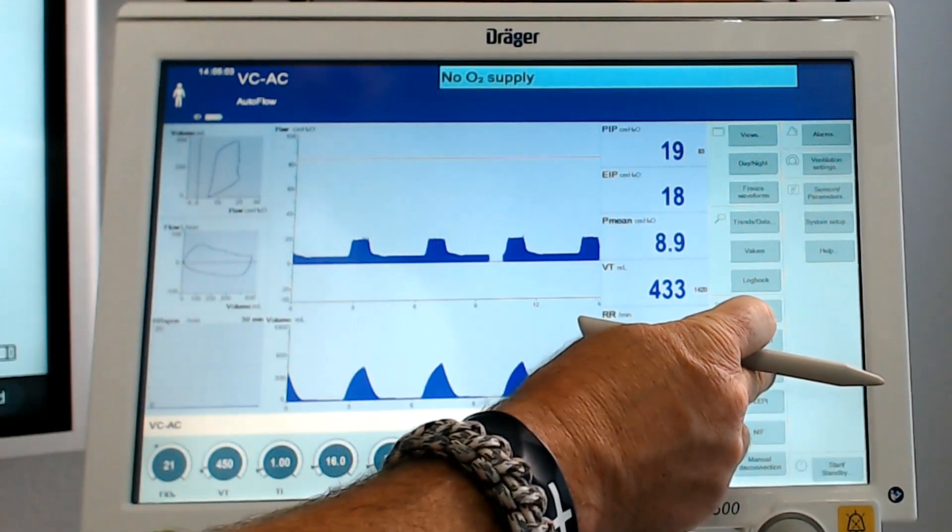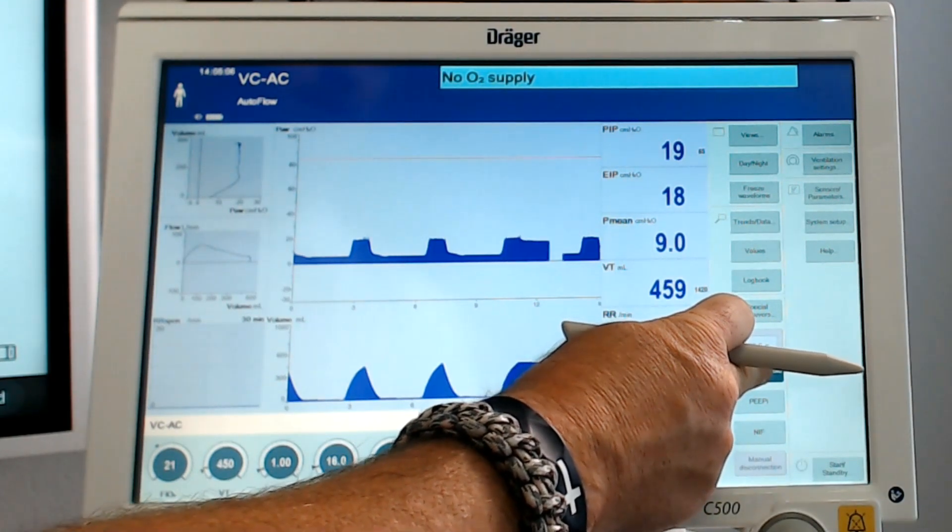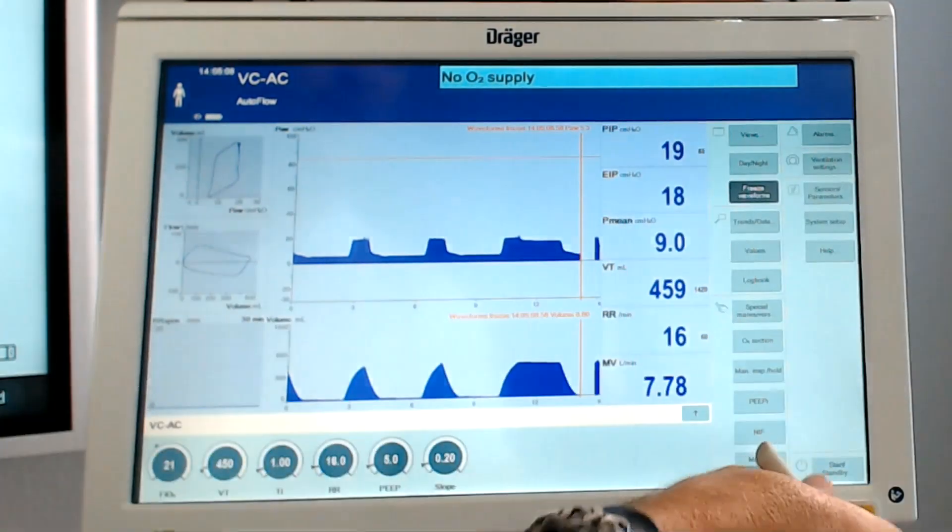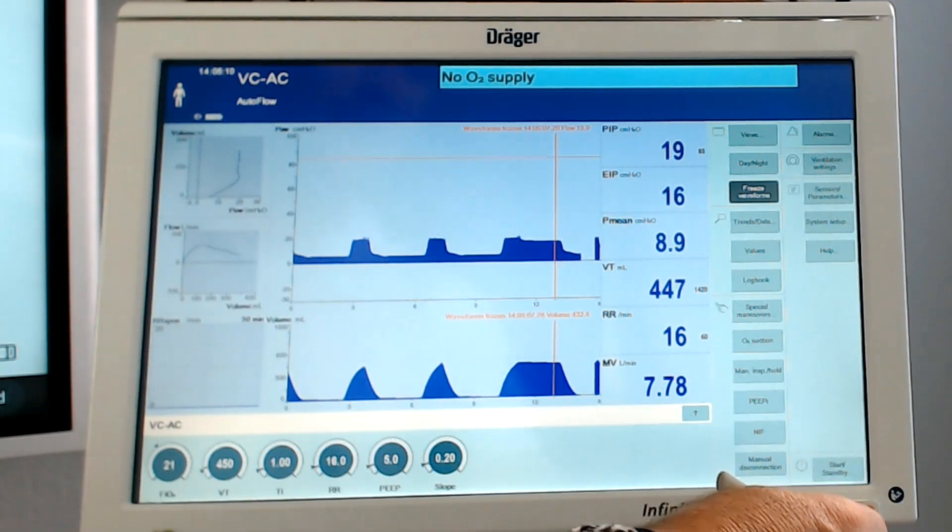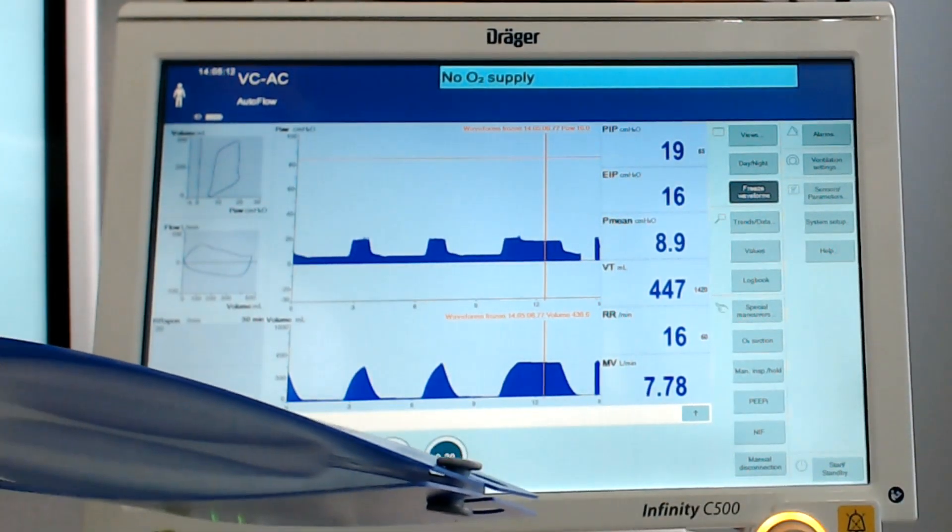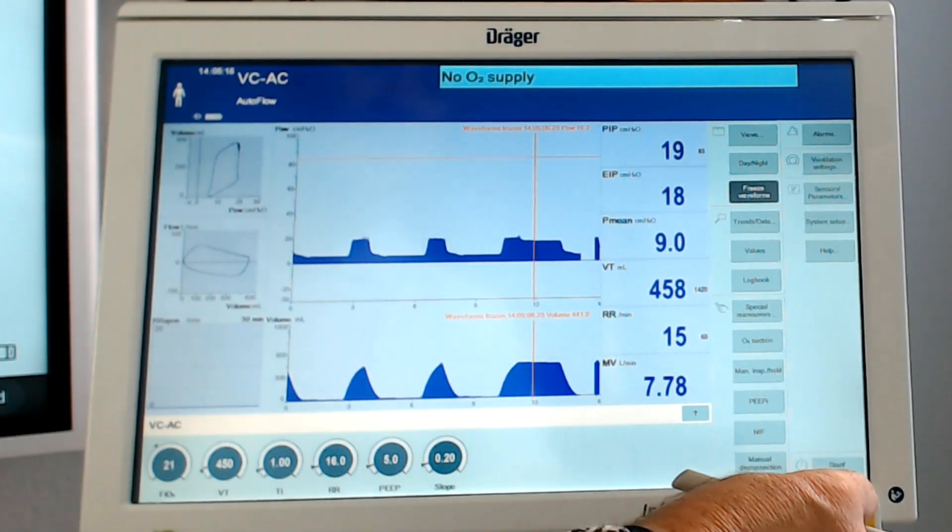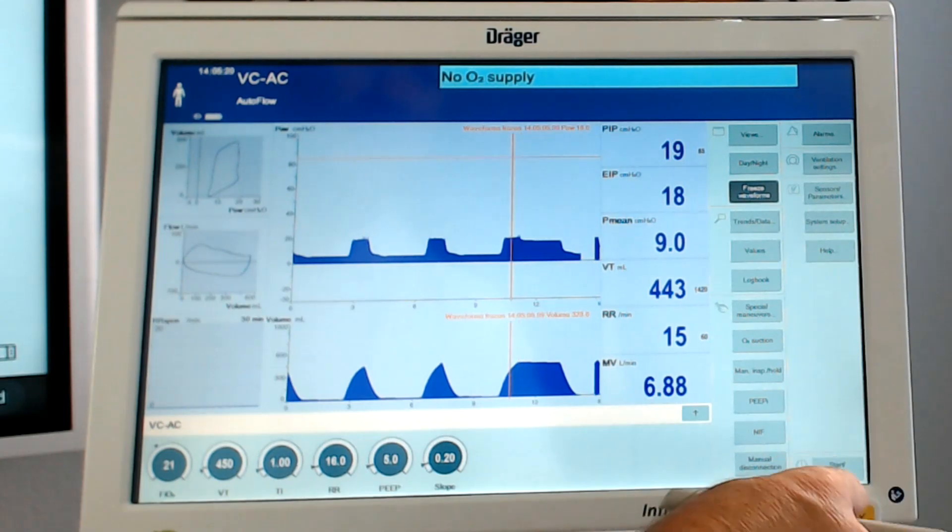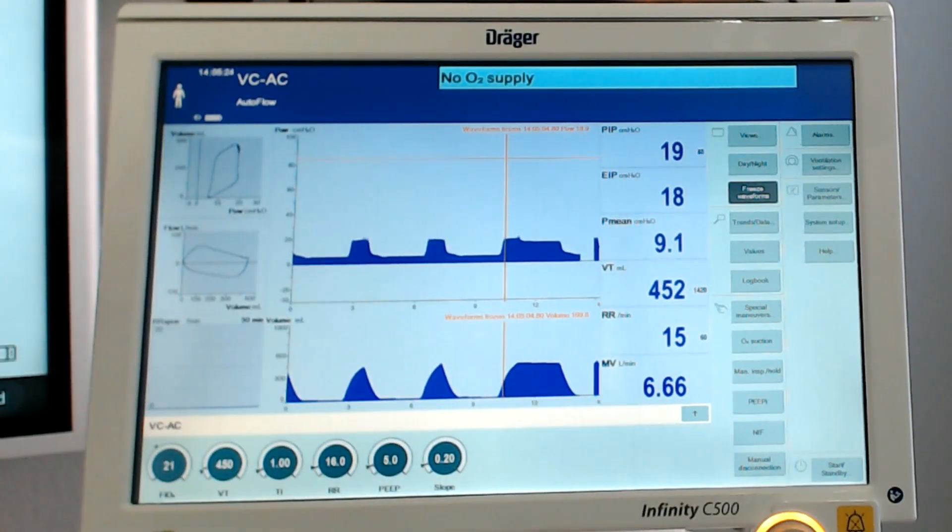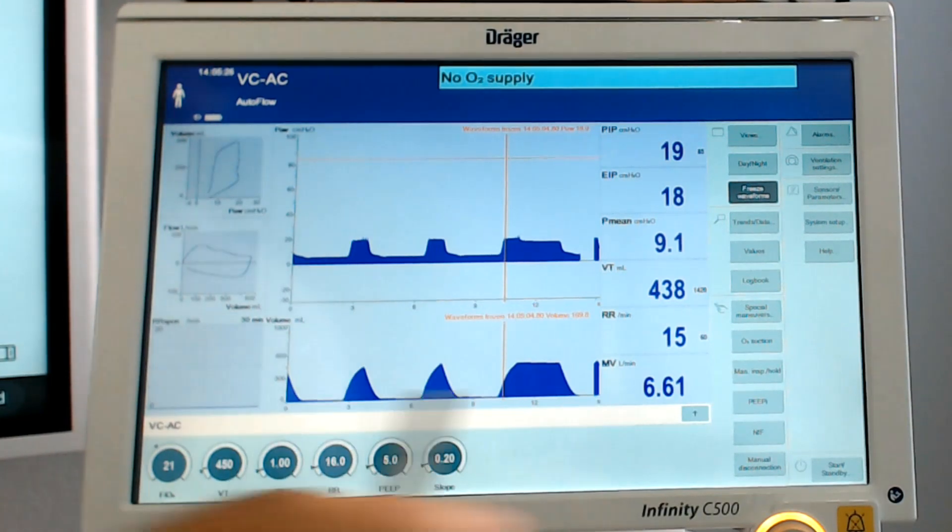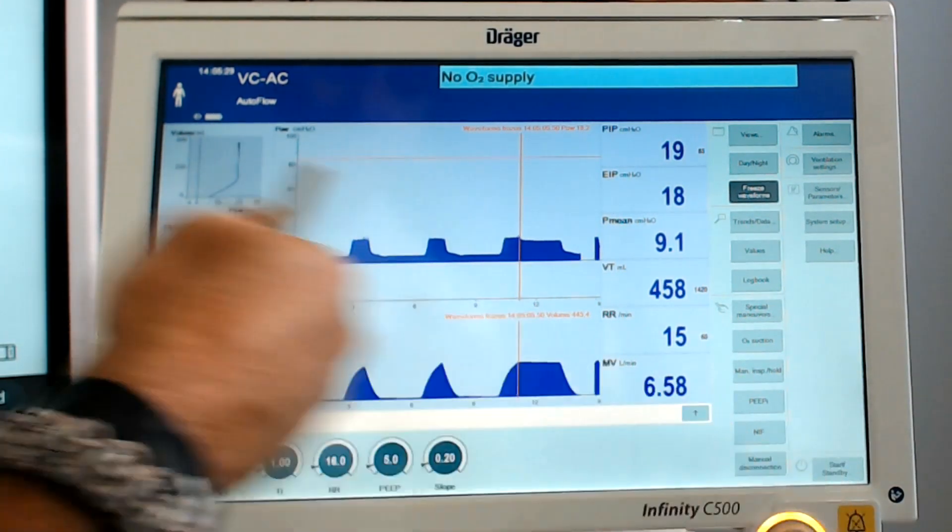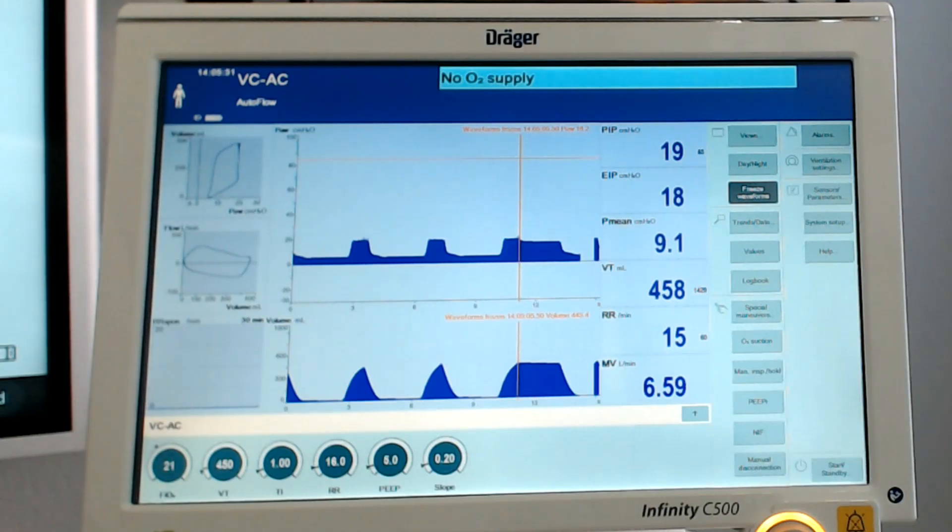We're going to go ahead and hold this now. Inspiratory hold. Freeze that. We did get a little slight drop, but that's due to the compliance of the test lung. We see our plateau pressure is about 17 and our peak inspiratory pressure was 19. So 19, 17 and our delivered volume here came in at 445.